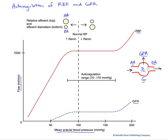PC, this blood hydrostatic pressure, is regulated through adjustments to afferent and efferent resistances through constriction and dilation. If we have a normal blood pressure, we end up with GFR at about 125 milliliters per minute.